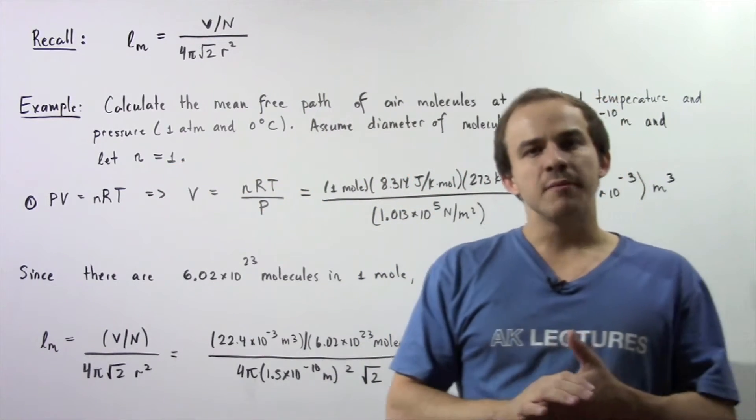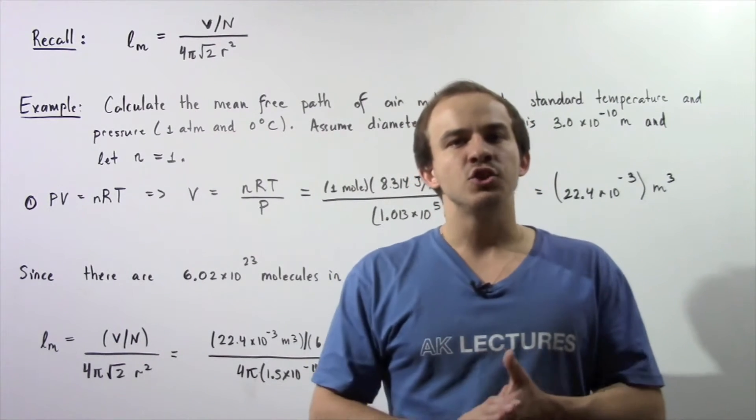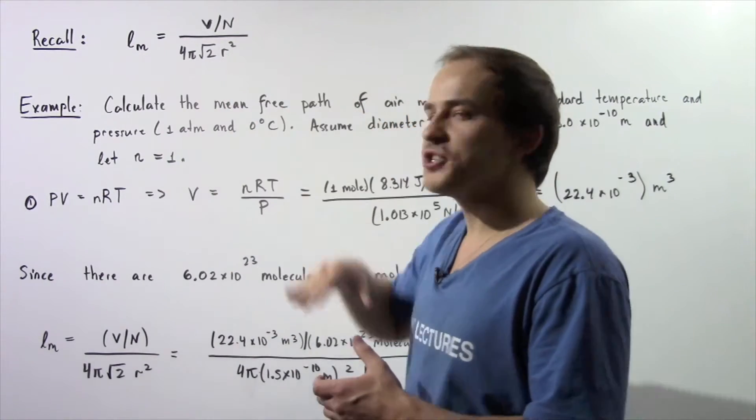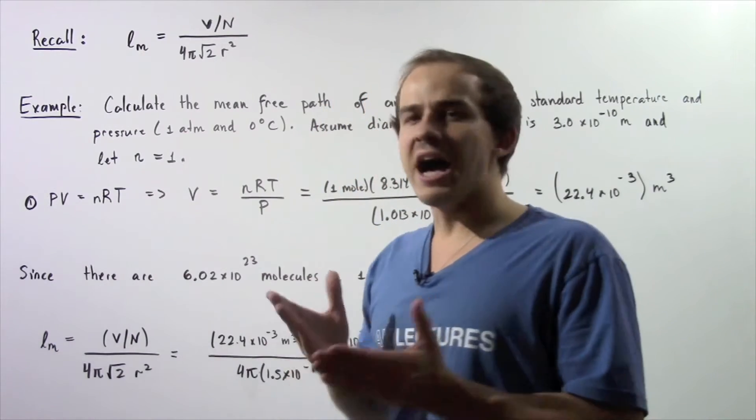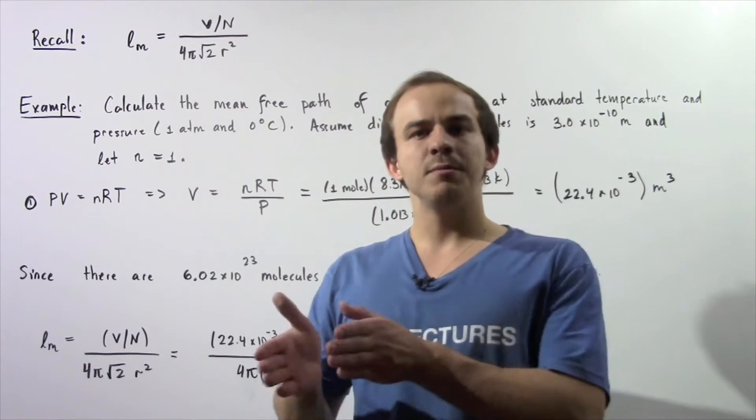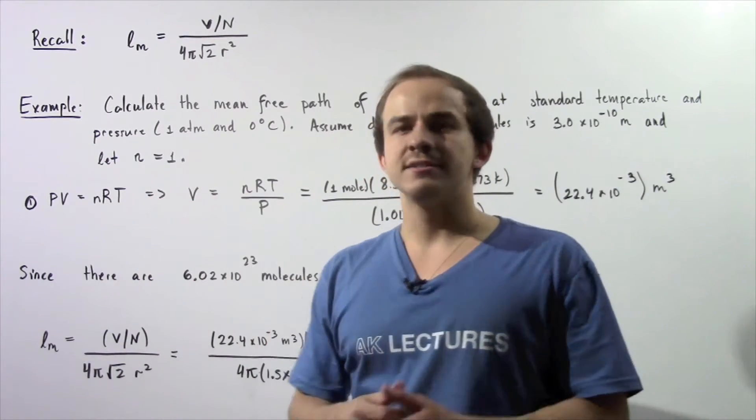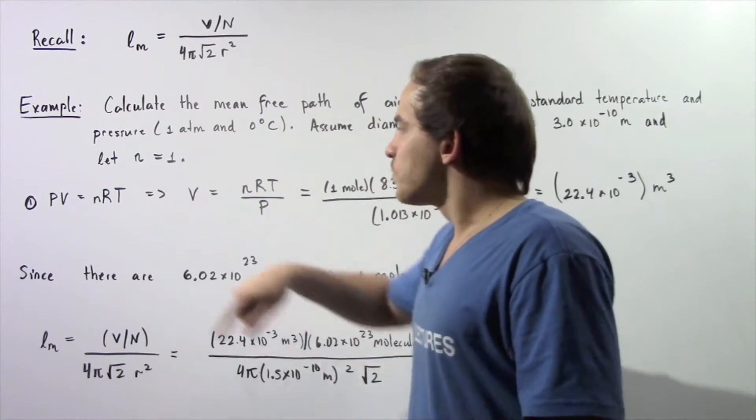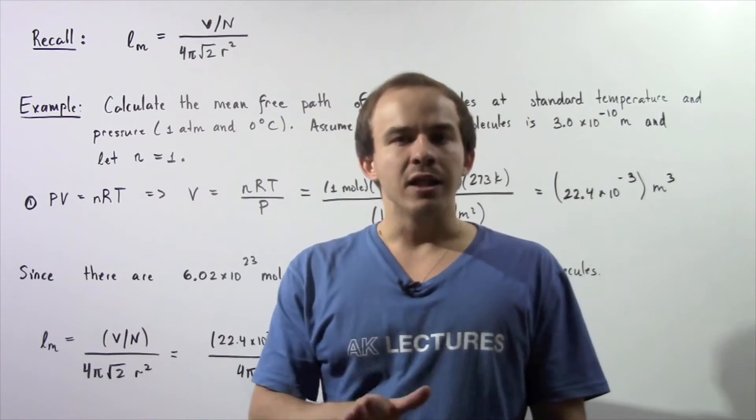In the first step we want to calculate the volume that the molecules take up, and in the second step we want to apply this equation knowing the volume. We have to use the ideal gas law which states that PV = nRT. We take this equation and rearrange to solve for the volume.